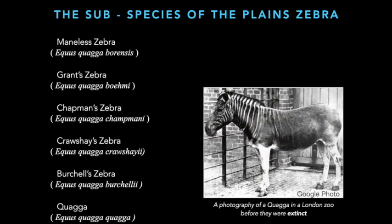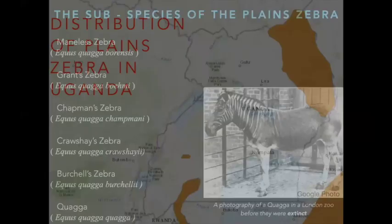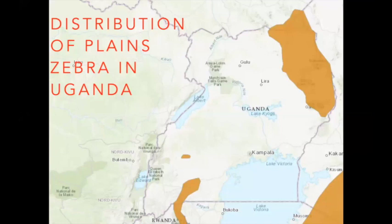The maneless zebra is the farthest north subspecies of the plains zebra and can be found in northern Uganda, South Sudan, and Kenya. Looking at the distribution of plains zebras in Uganda: on the northeastern side, Kidepo Valley National Park and Pian Upe Wildlife Reserve fall within the range of the maneless zebra (Equus quagga borensis). In the southwestern parts of Uganda, Katonga Wildlife Reserve and Lake Mburo National Park are home to the Grant's zebra, another subspecies of the plains zebra.